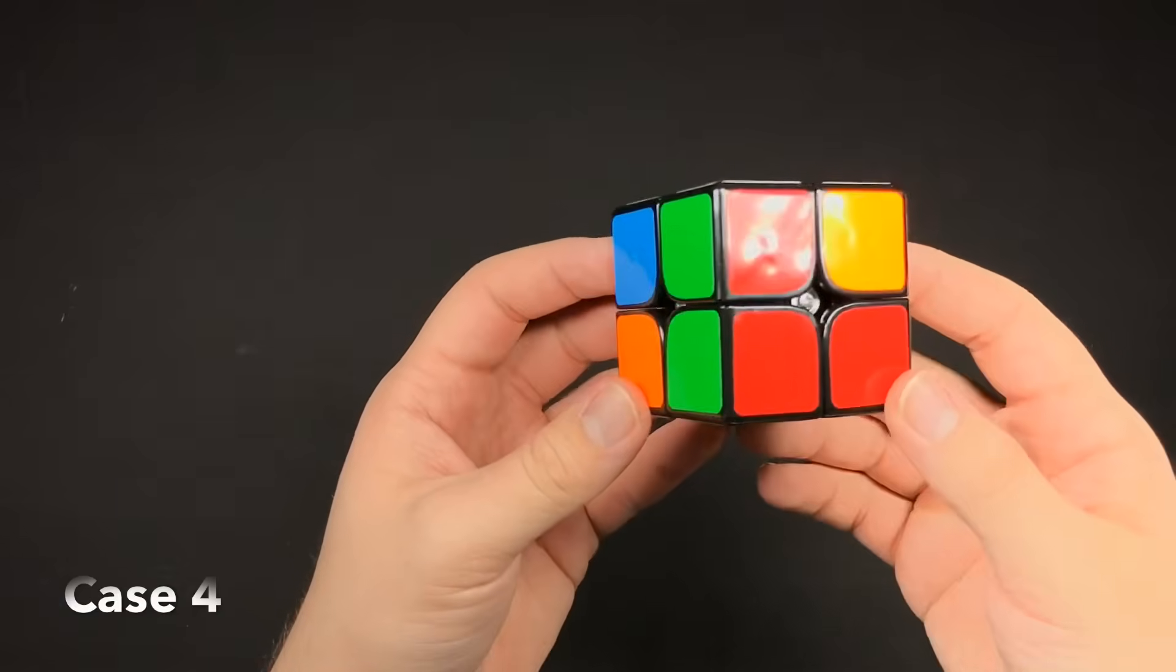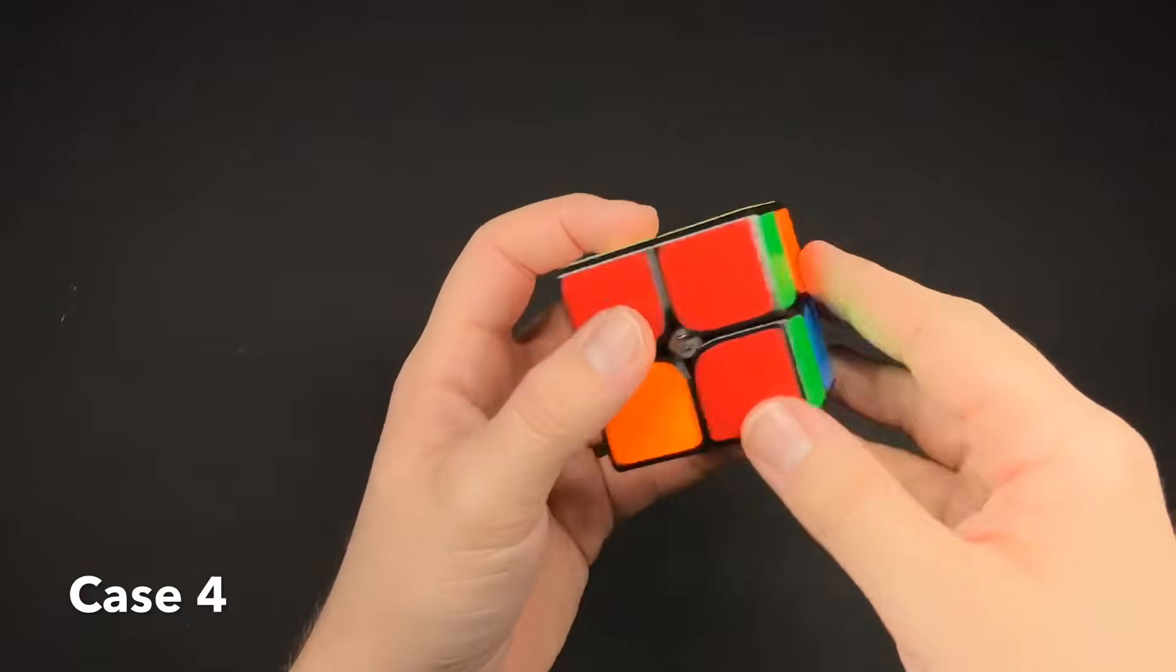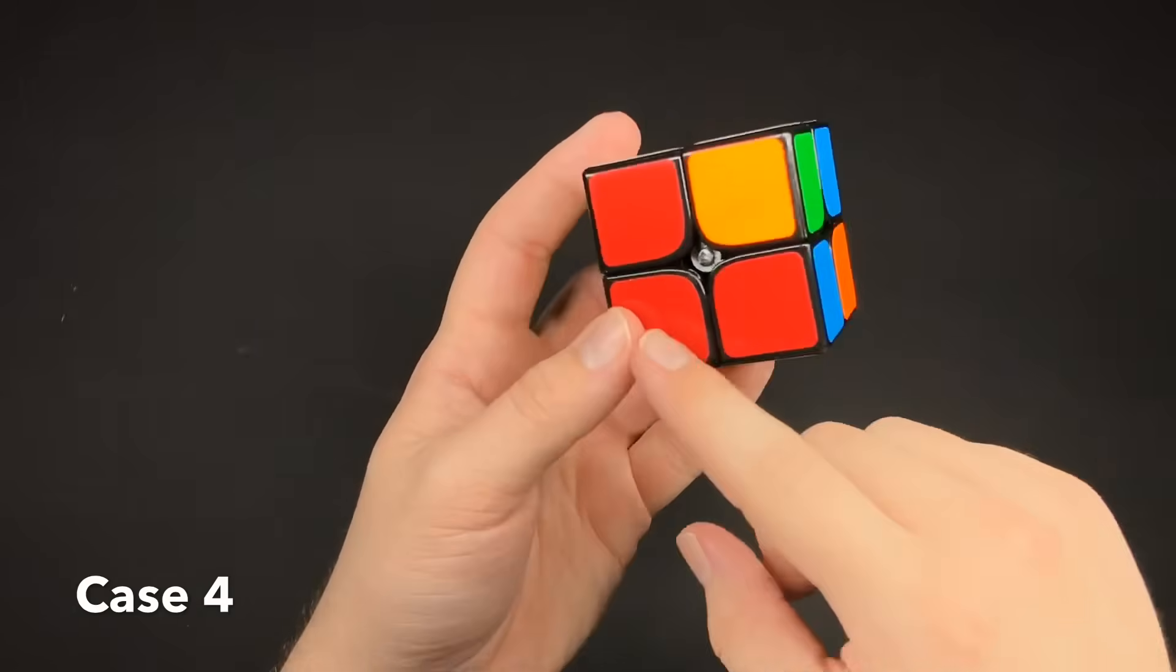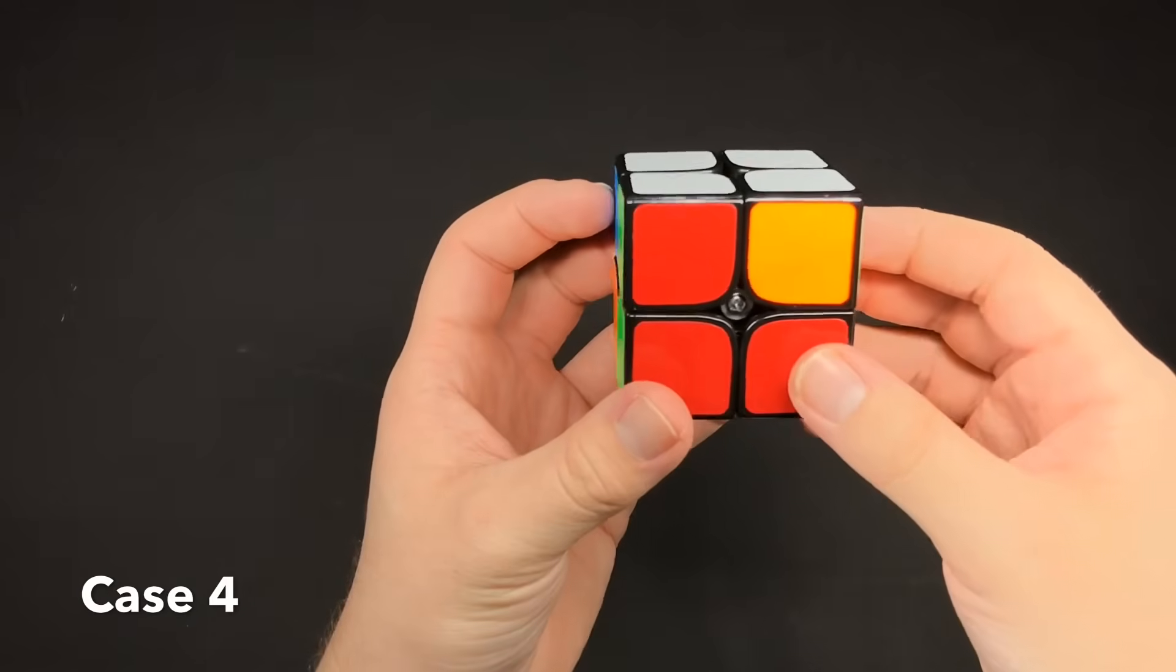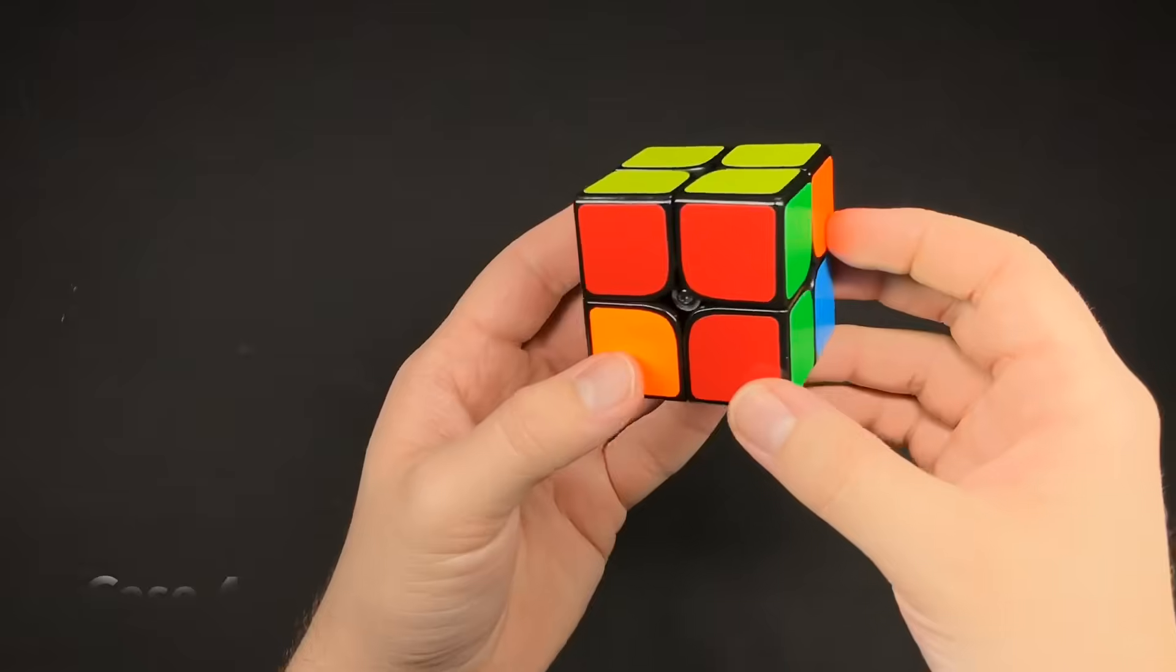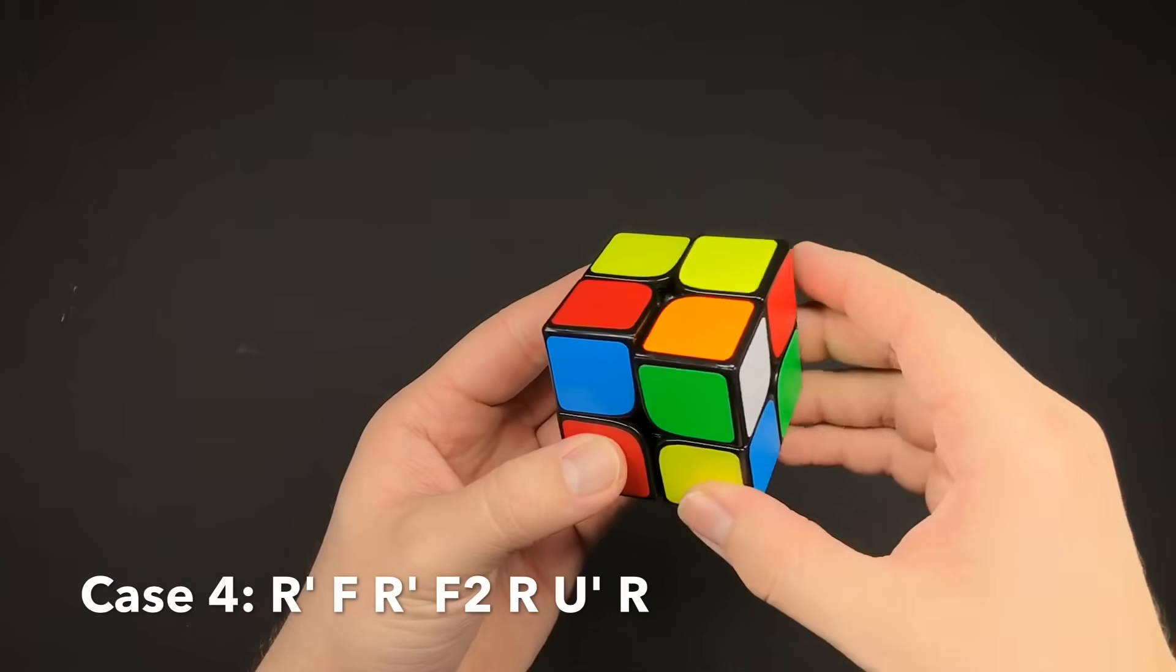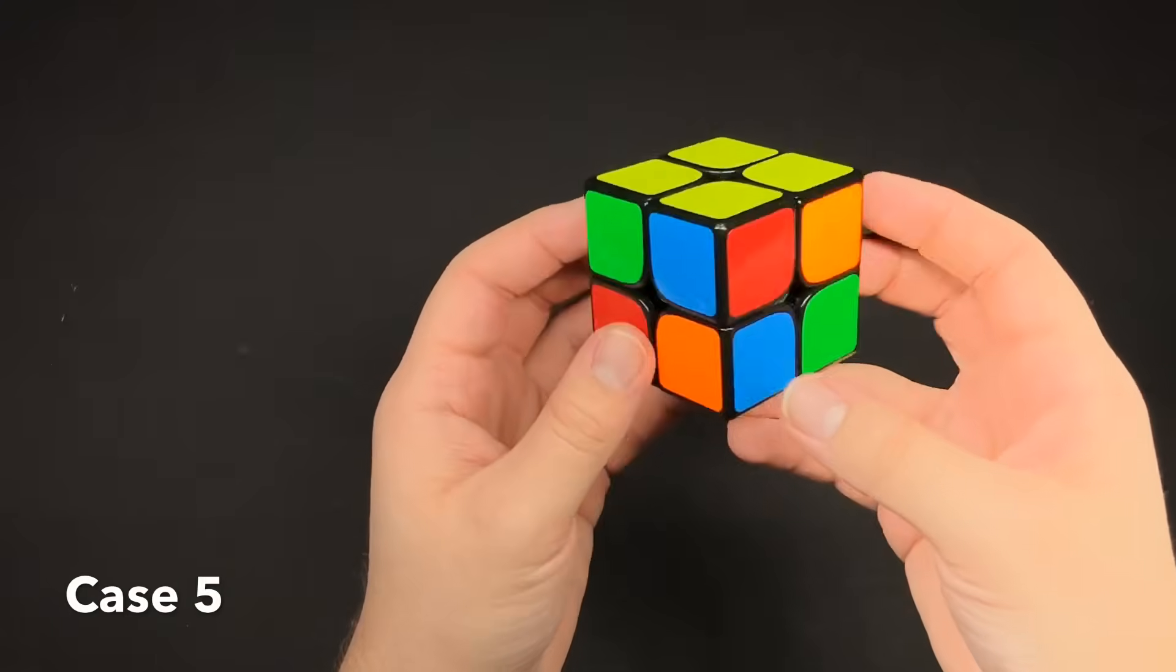So this case, you could look at it either way. You could look at it from this side. On the bottom side, you have no colors matching, and the top side, you have a bar. Or you could have it, the bottom side has a bar and then the top side has none. You could use the same algorithm, you just would have to turn it so the bar is on the top.